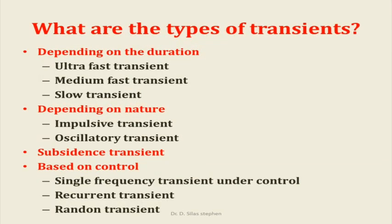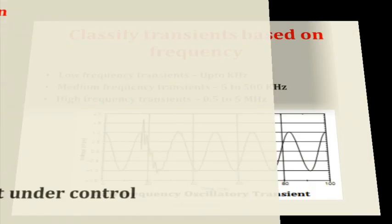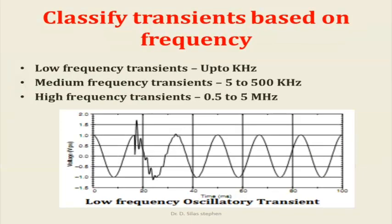What are the types of transients? Ultra-fast transients, medium-fast transients, slow transients, impulsive transients, oscillatory transients, and subsidence transients. Classified by frequency: low-frequency transients, medium-frequency transients, and high-frequency transients.